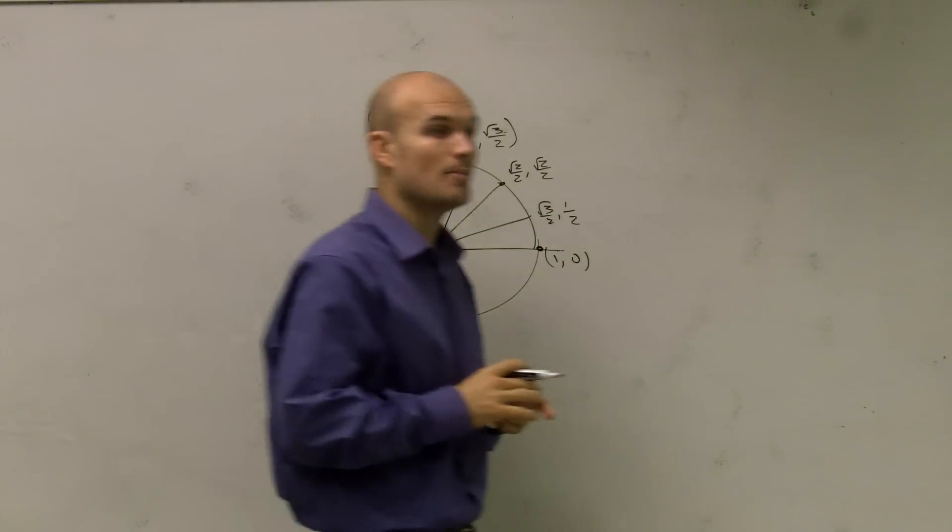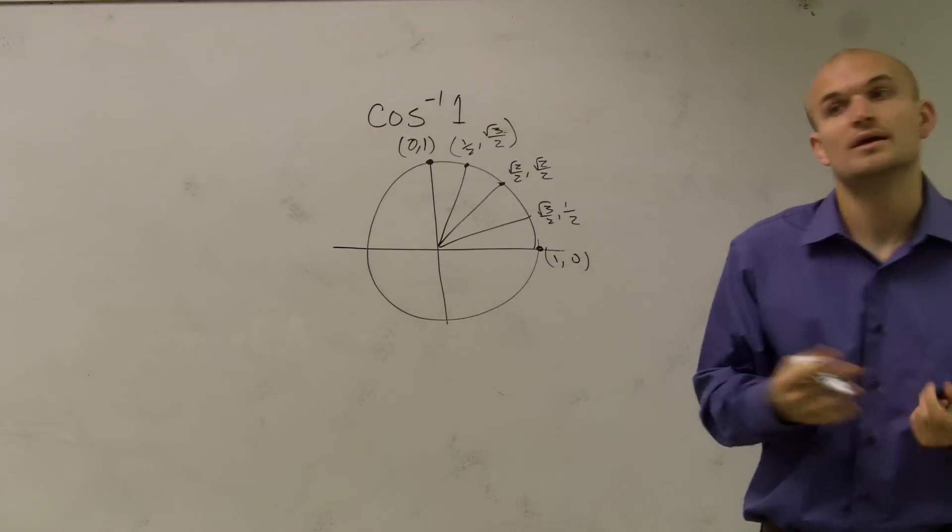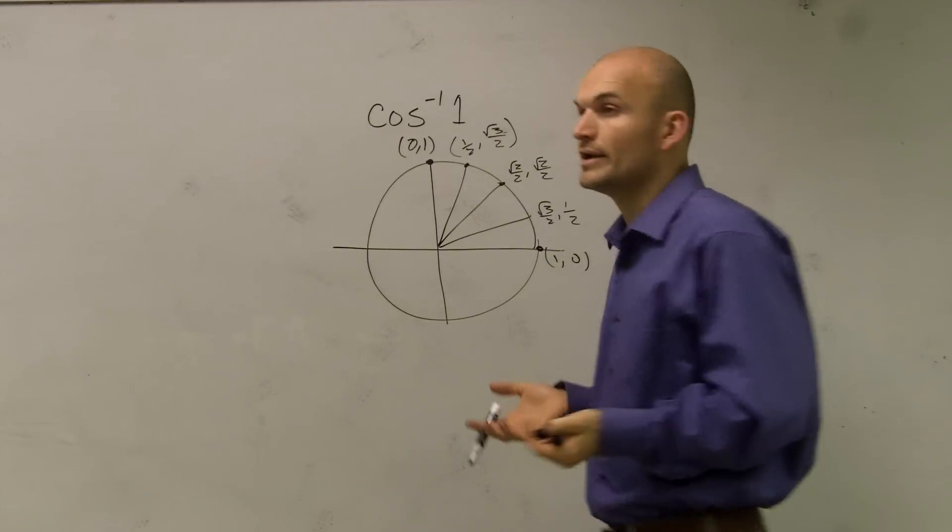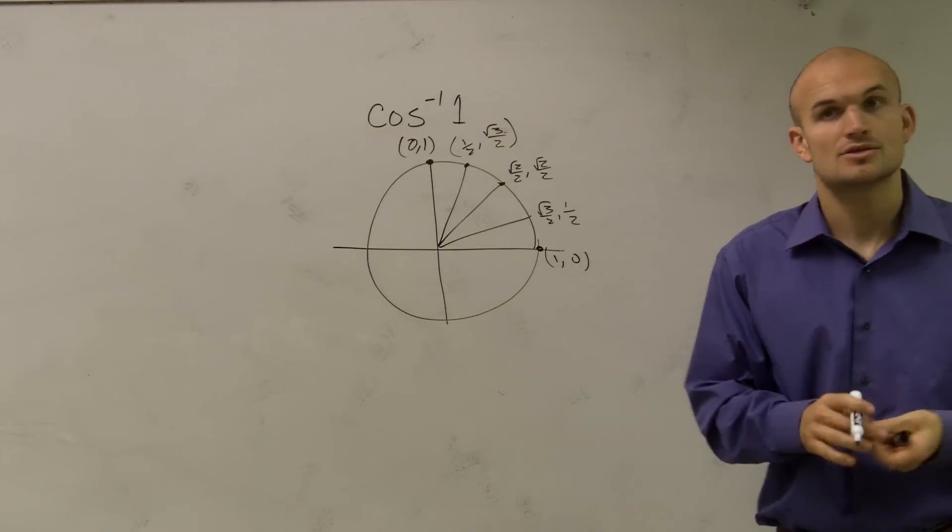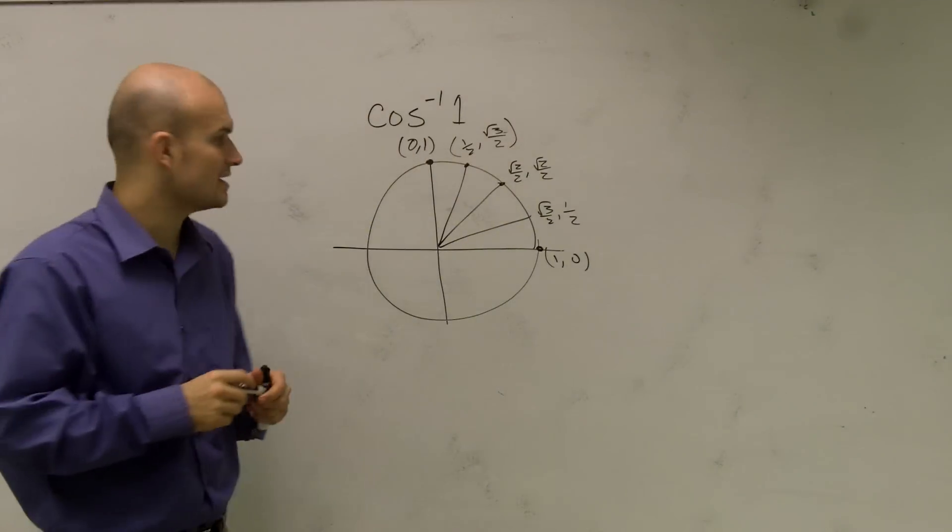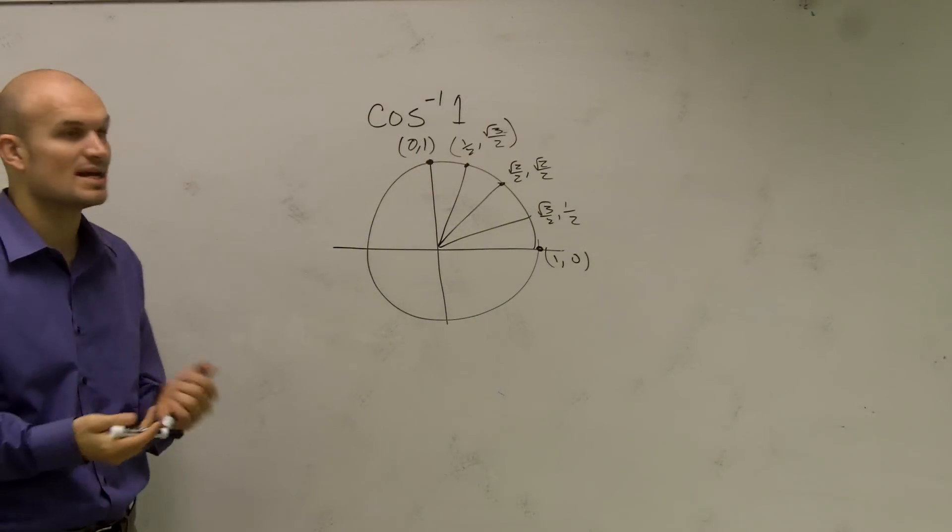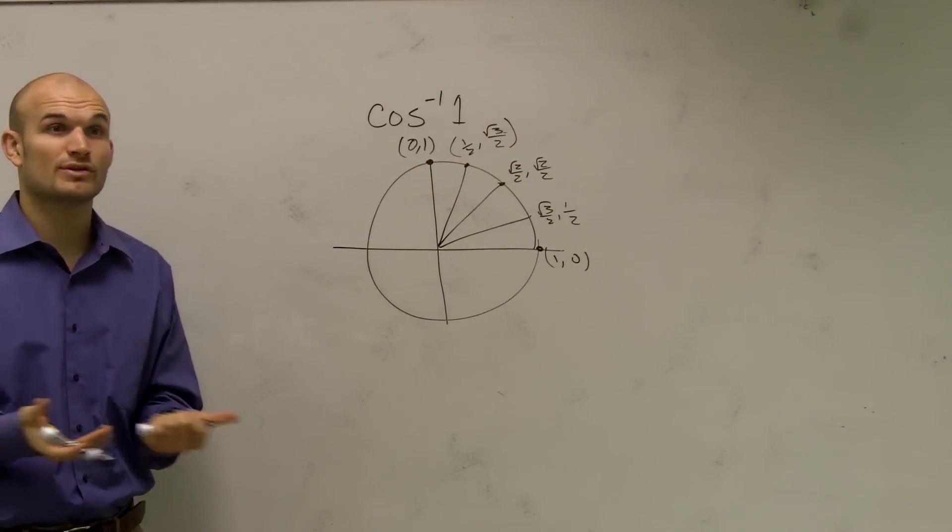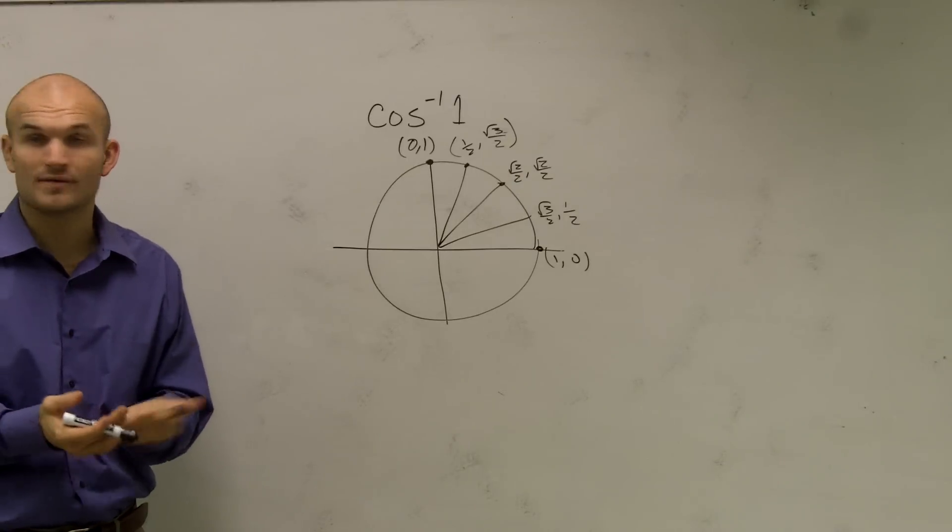So what I did was I just redrew our unit circle. So what they're asking for is the inverse cosine of 1, what is going to be our angle? So first thing I need to understand is, where exactly is cosine going to equal 1? And there's really only one angle that our cosine is going to equal 1.